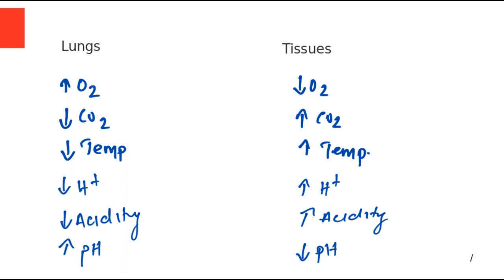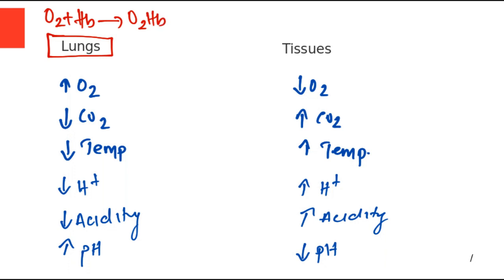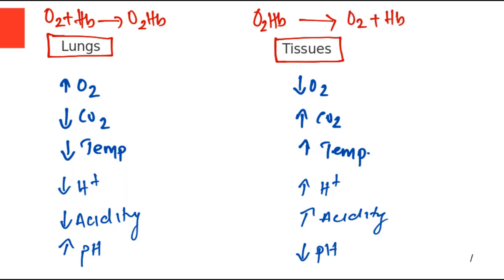So this is the list we have obtained. In the lungs, under conditions of high O₂, low CO₂, low H⁺, and high pH, oxygen and hemoglobin combine to form oxyhemoglobin. In the tissues the conditions are exactly opposite, and oxyhemoglobin dissociates to release oxygen. These are the factors causing the release and binding of oxygen to hemoglobin.